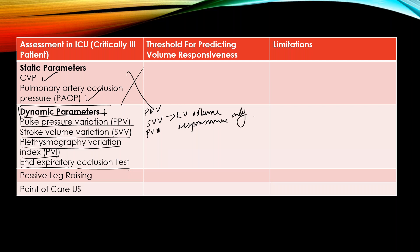I will not go into the physiology of these tests, but if the pulse pressure variation is greater than 13%, stroke volume variation is greater than 10%, and plethysmography variation is greater than 10 to 15%, that indicates volume responsiveness. These three tests — pulse pressure variation, stroke volume variation, and plethysmography variation — indicate left ventricular volume responsiveness only.